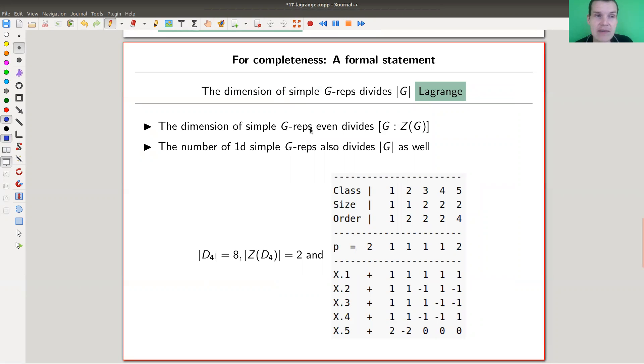So the theorem is that indeed the dimension of simple representations divides the order of the group. And actually, you can do better. So let's look at two theorems. Actually, the dimension of a simple module divides the group by the order of its center. So for example, D4 has a center of size two. And it still works pretty well. All of those numbers actually divide four, not just eight. So you can do better. And these numbers are optimal.